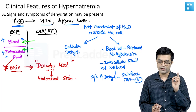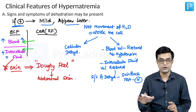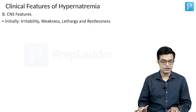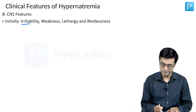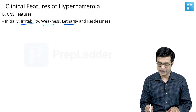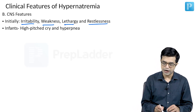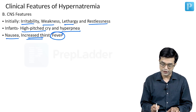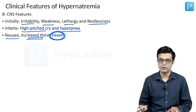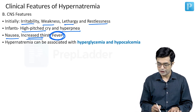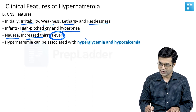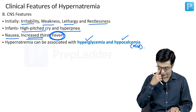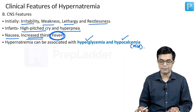The second major feature is CNS manifestations. The CNS features initially are non-specific and include irritability, weakness, lethargy, and restlessness. Infants will have a high-pitched cry; hyperpnea, nausea, and increased thirst will be present. Fever is often present, which may or may not be related to the primary pathology. Hypernatremia can also be associated with hyperglycemia and mild hypocalcemia, though Nelson notes the reason for these associations is not entirely clear.